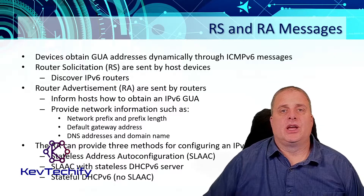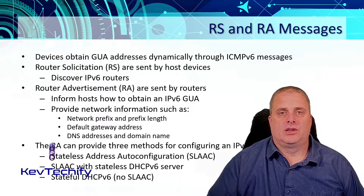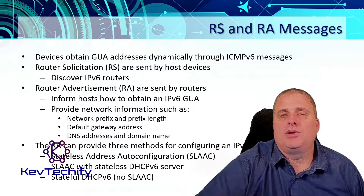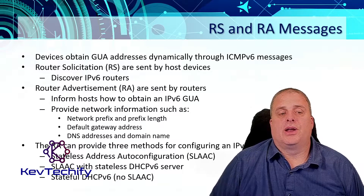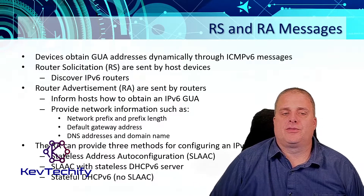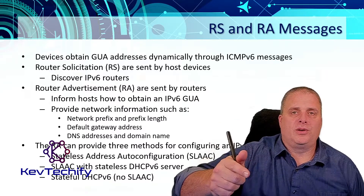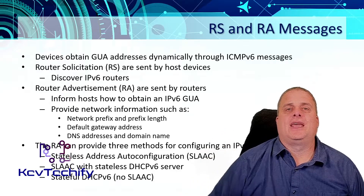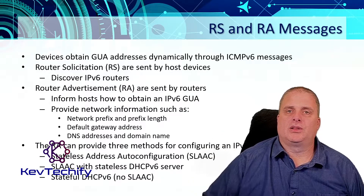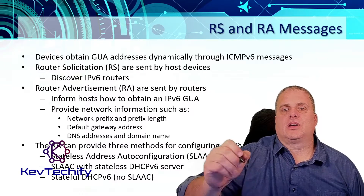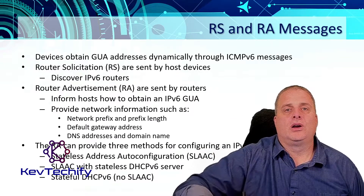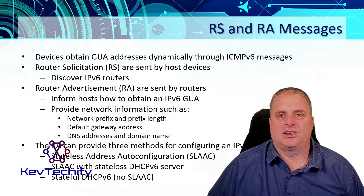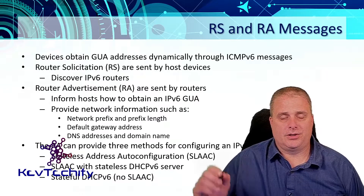Router advertisements are sent by the routers themselves, by the default gateways. They let devices know how they're going to get an IPv6 address on the network. They can provide different types of information including the network prefix and the prefix length — the network portion of the address — what the default gateway is (typically the link local address of the router interface), and other information like a DNS address and domain name.